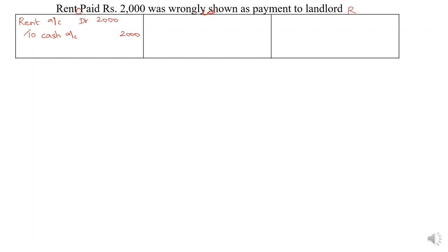Now, what was the entry that was actually recorded — the wrong entry? The rent that was paid: instead of debiting rent account, landlord's account was debited. So the wrong entry is landlord's account debit to cash account, rupees 2,000.